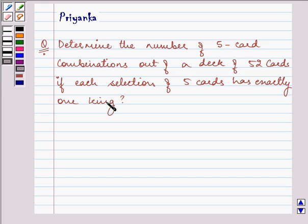Let us start with our solution. We have been given a deck of 52 cards. We need to find card combinations. We have to select 5 cards as follows.